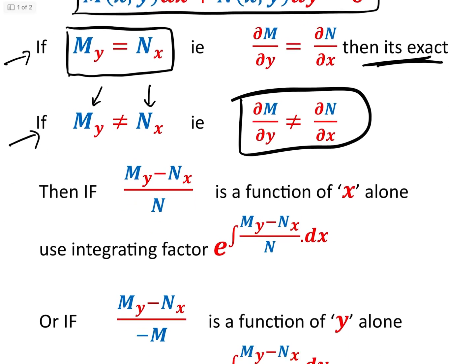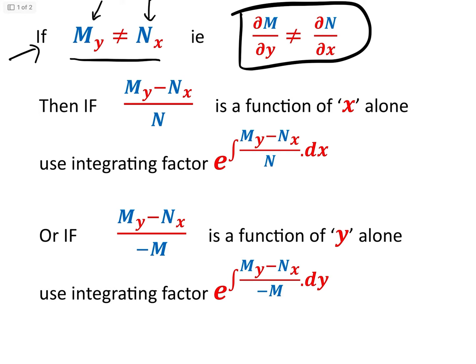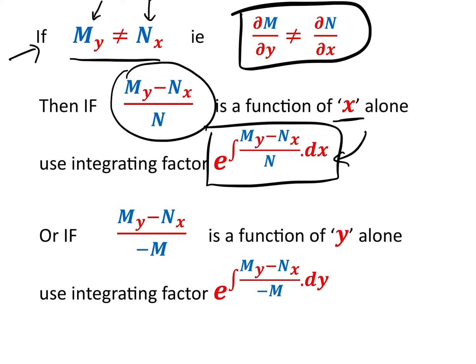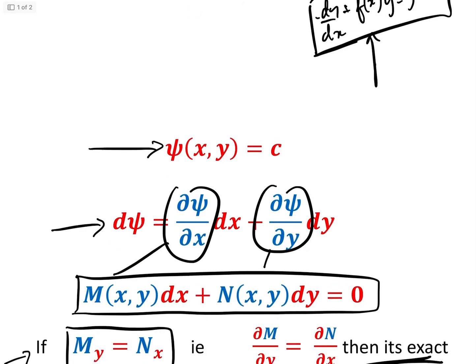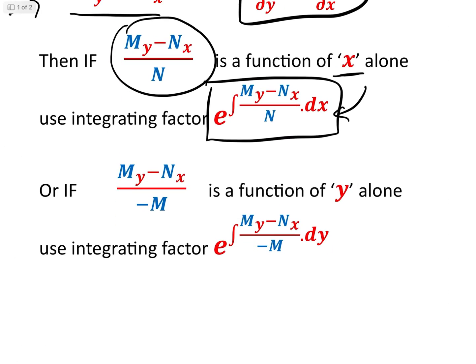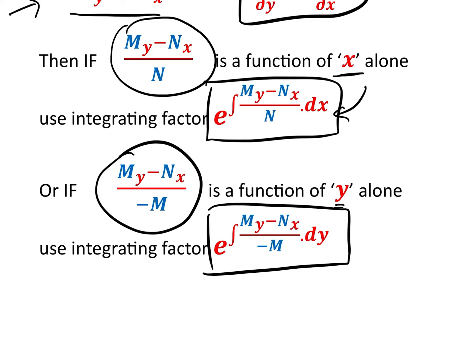All is not lost because we have two further options. So if M_y does not equal N_x, then we can check: is (M_y − N_x)/N a function of x only? And if it is, then we can use this as an integrating factor. The astute may notice that the integrating factor here is very similar to the integrating factors we've already been dealing with for this first-order differential equation. Alternatively, if (M_y − N_x)/(−M) is a function of y alone, then that is the integrating factor.